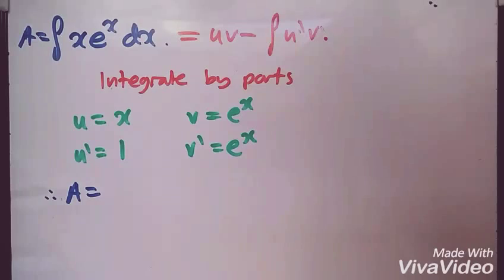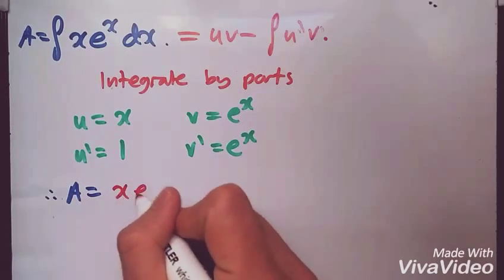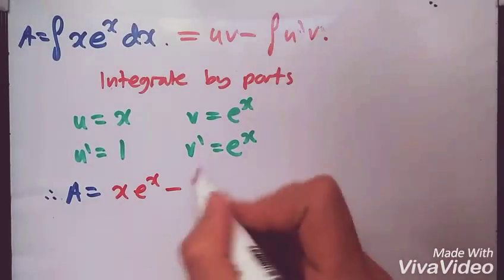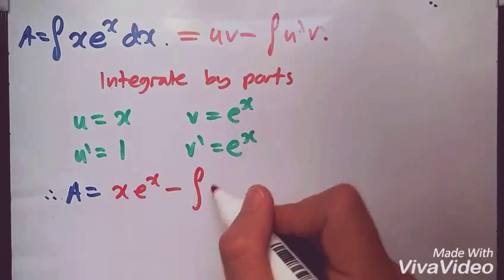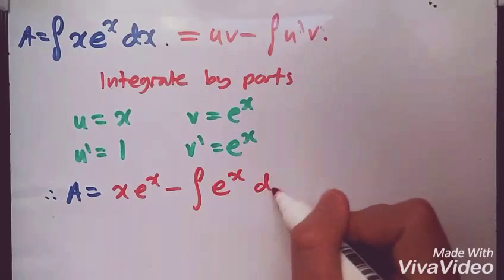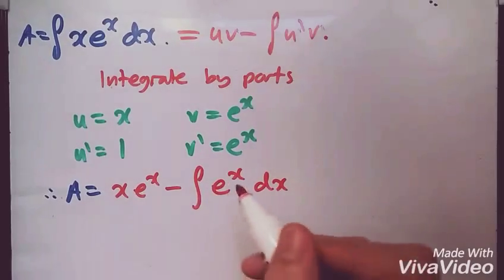So therefore, the answer A is u times v, so u times v is x*e^x minus the integral of u prime times v. So u prime times v, 1 times e^x, is e^x dx. And again, you've probably seen this before, this is easy.